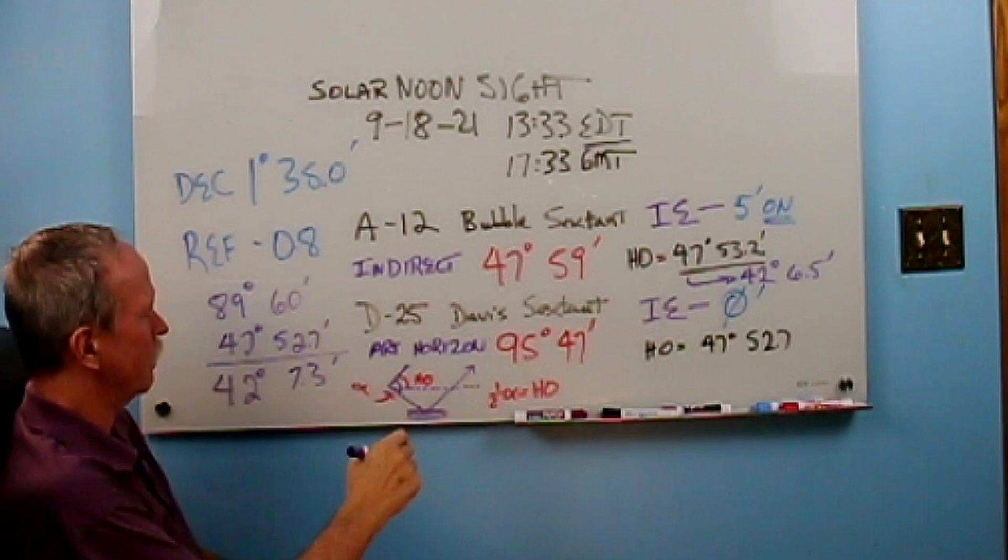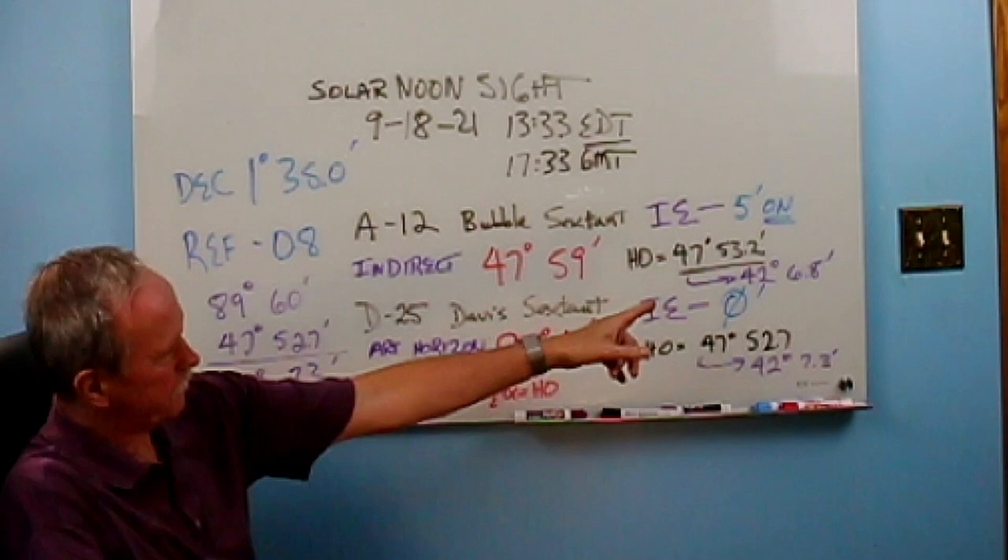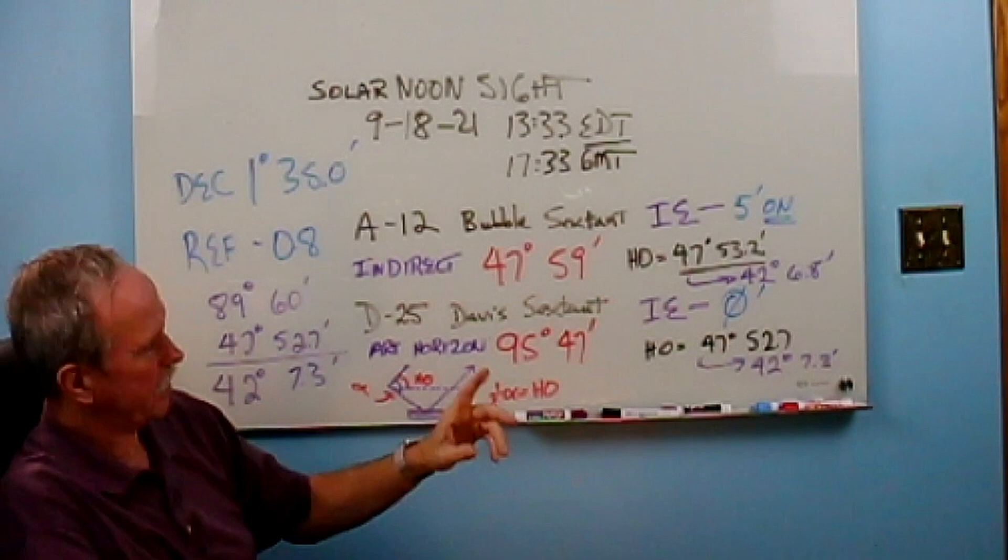And we do that. We get 42 degrees, 7.3 minutes. And I noticed too, we're going to write that over. And I noticed I made a slight error over here. There we go. Got that fixed. That was 42 degrees, 6.8 minutes, not 6.5 minutes. Sorry about that. And the other one that I got was 42 degrees, 7.3 minutes.